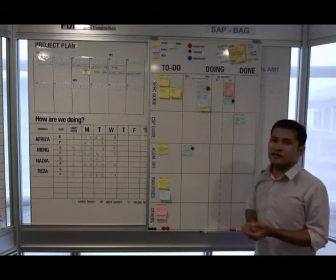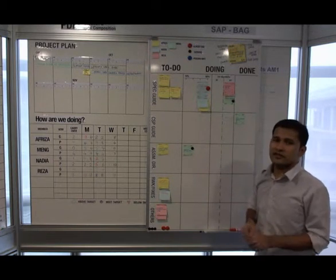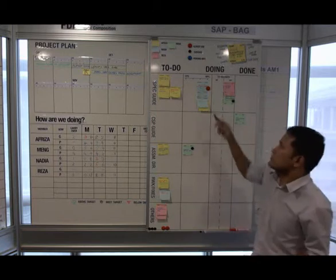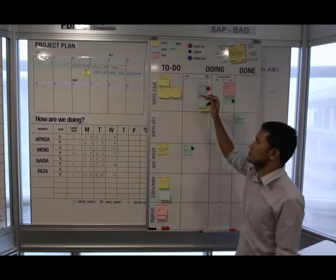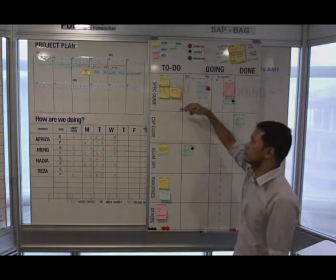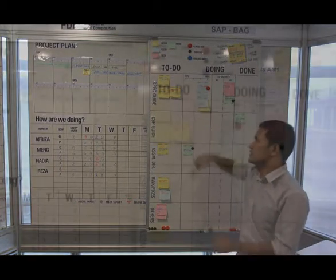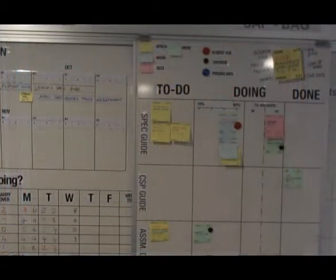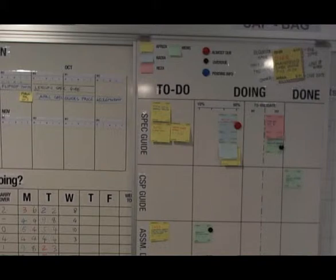Once you have opened a new sticky note, you're going to put that sticky note into the to-do column, so it will be sorted according to the category itself — whether it's Spangite, CSP, assembly directions, rework, and others.